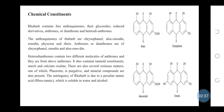Chemical Constituents: Rhubarb contains free anthracones, their glycosides, reduced derivatives, anthrones or dianthrones, and hetero-dianthrones. The anthracones of rhubarb are chrysophanol, aloe-emodin, emodin, physcion, and rhein. Anthrones or dianthrones are of chrysophanol, emodin, and aloe-emodin. Hetero-dianthrones contain two different molecules of anthrones and they are derived from the above anthrones.